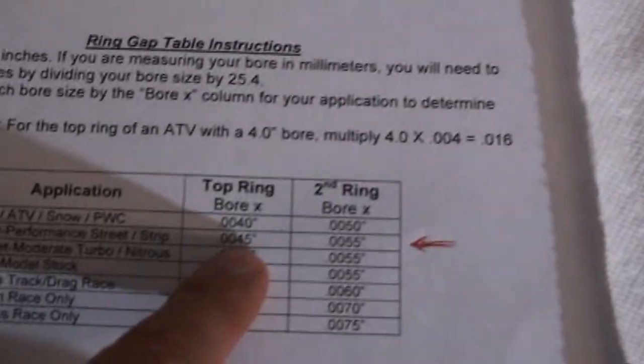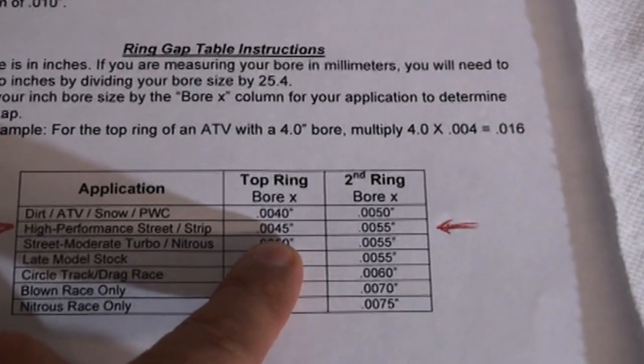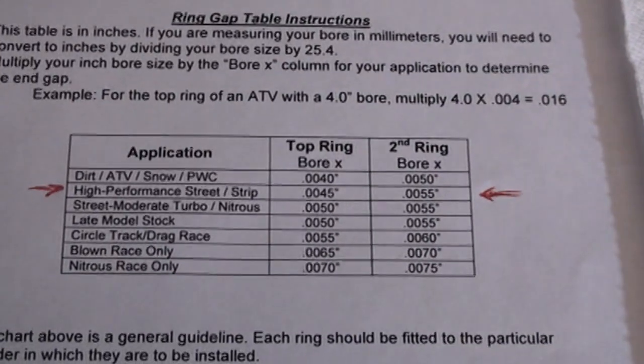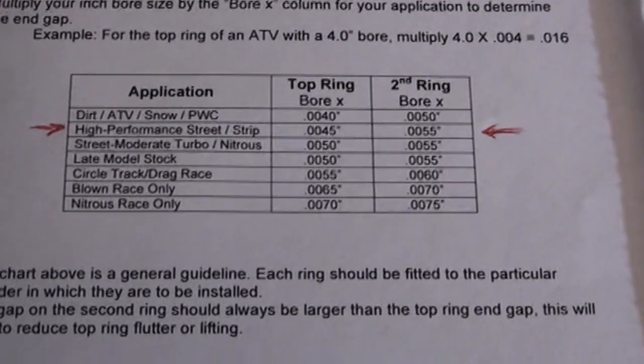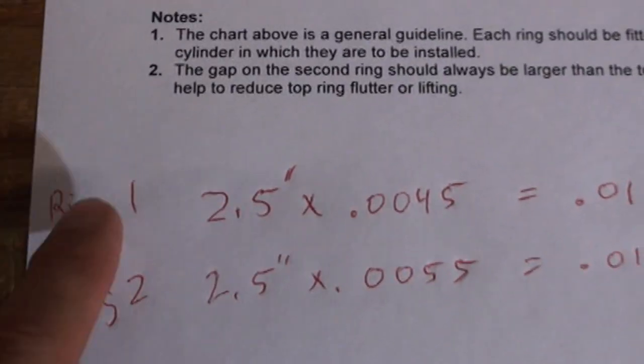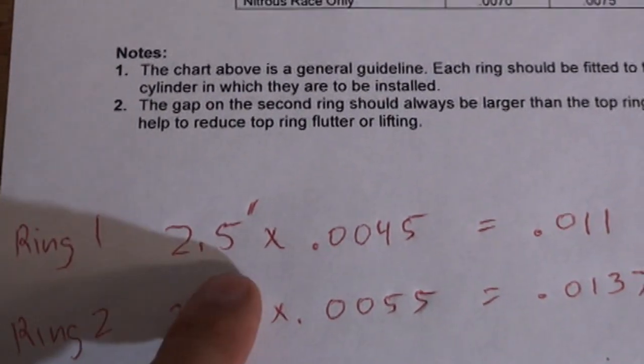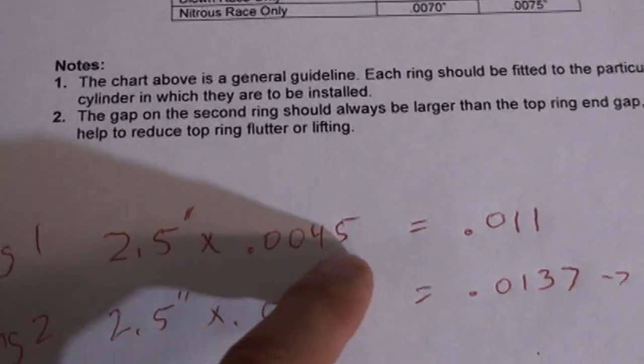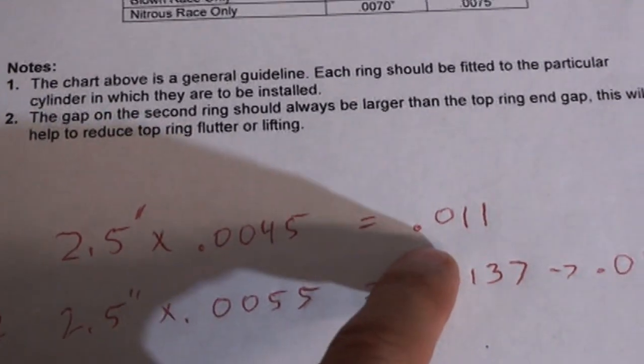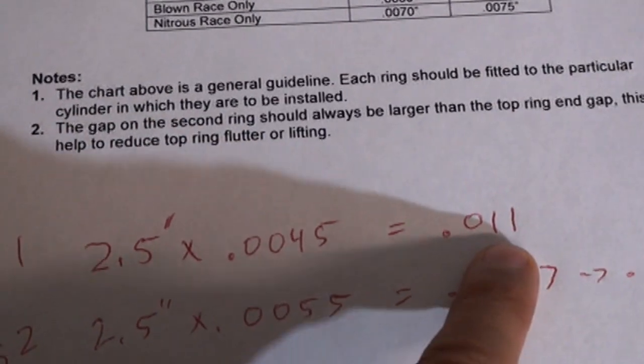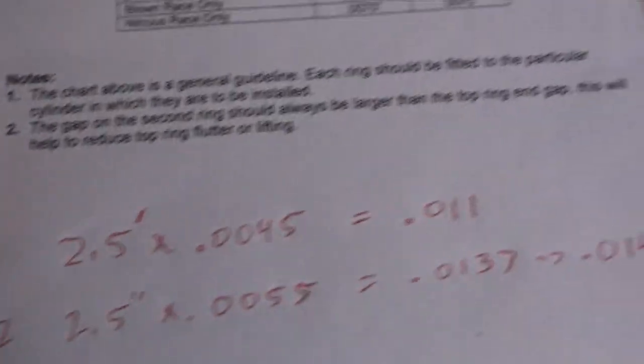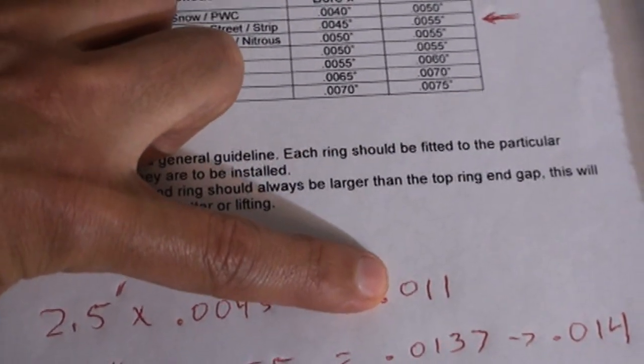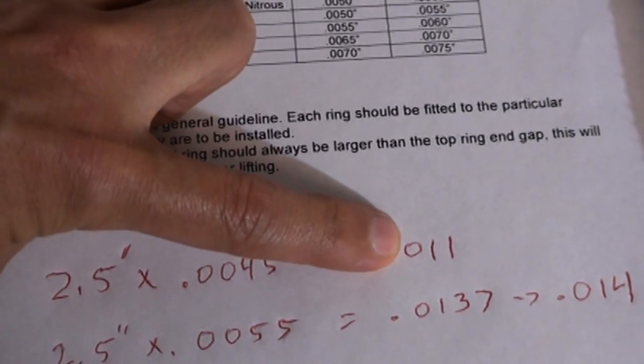So basically you're going to take .0045 and multiply it times 2.5. So here's what we got. Ring one, 2.5 inch cylinder bore, times .0045 equals .011. So that means our top ring needs to have a ring gap of .011.